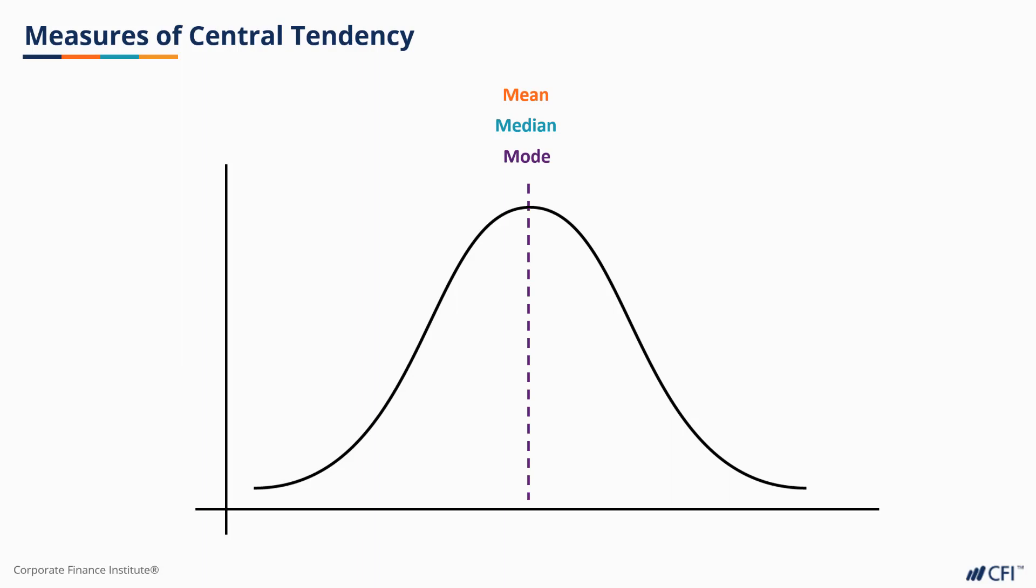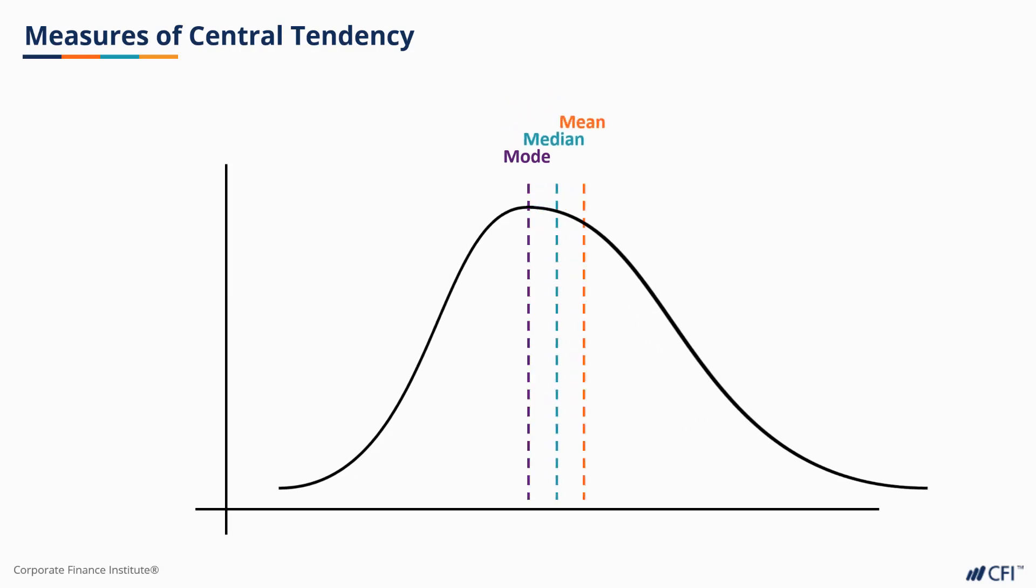One of the ways in which these three measures are different is in how sensitive they are to outliers or skewing. As our data skews left or right, the mean moves with that skewing. The median moves as well, but to less of a degree. And our mode remains right at the peak.